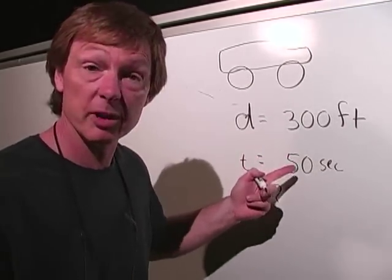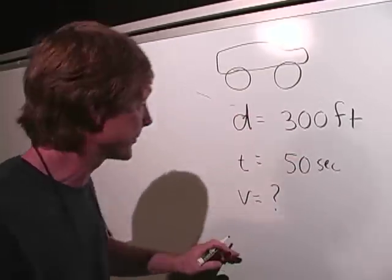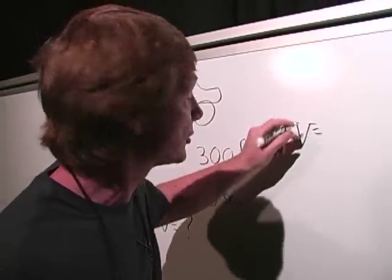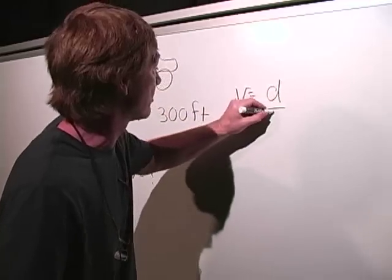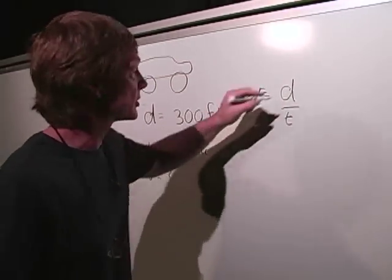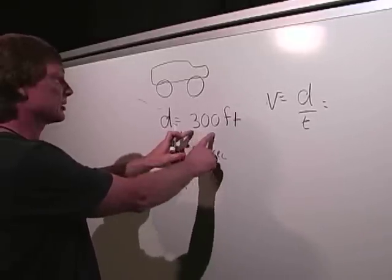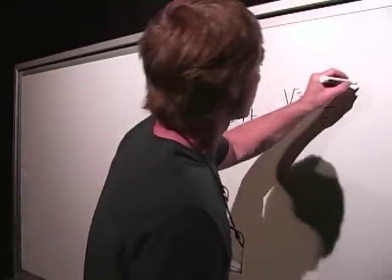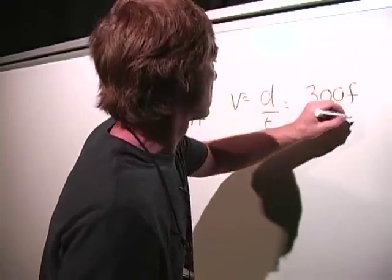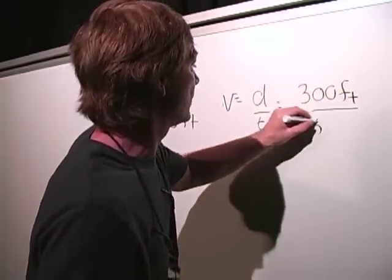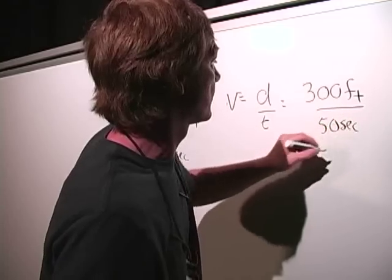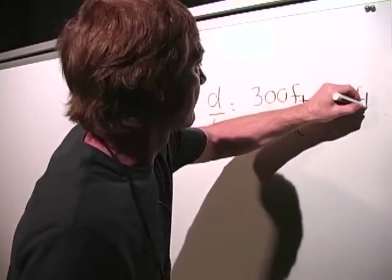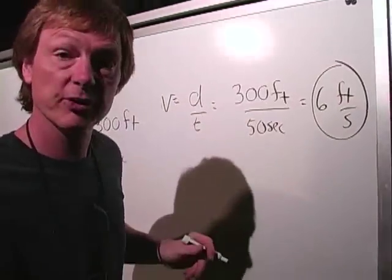Now, the units I'll typically get out will be feet per second. I've got feet, seconds. I've got velocity, I'll use a little v for that. It's distance divided by time. I've got d is 300 feet, t is 50 seconds. So I've got 300 feet over 50 seconds. And that's going to equal 6 feet per second.